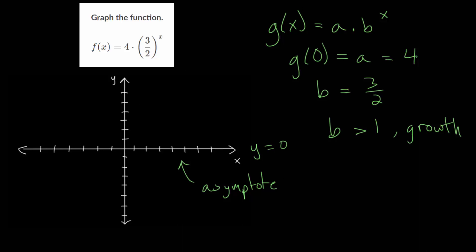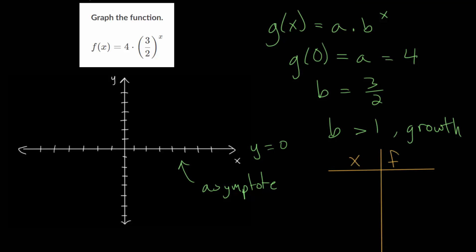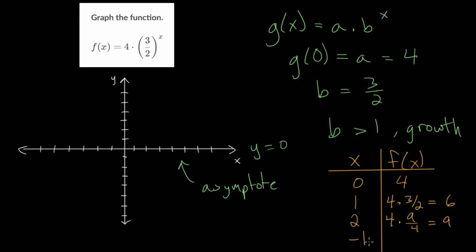Now let's make a table. When x = 0, f(x) = 4. When x = 1, we have 4 · (3/2) = 6. When x = 2, we have 4 · (3/2)^2 = 4 · (9/4) = 9. For x = -1, we have 4 · (3/2)^(-1) = 4 · (2/3) = 8/3, which is approximately 2.6 repeating.